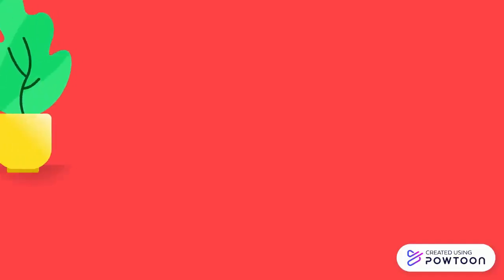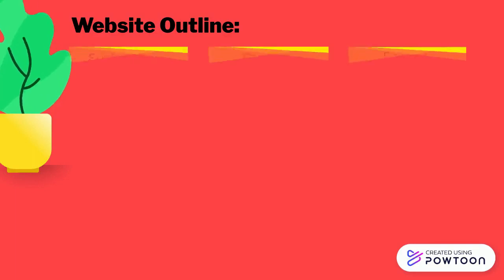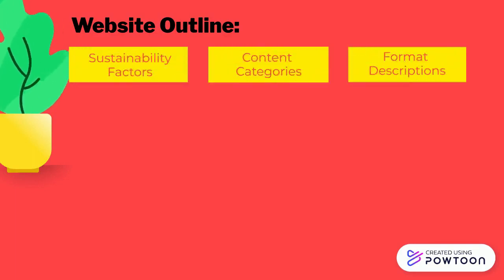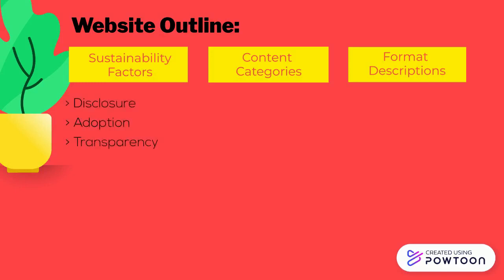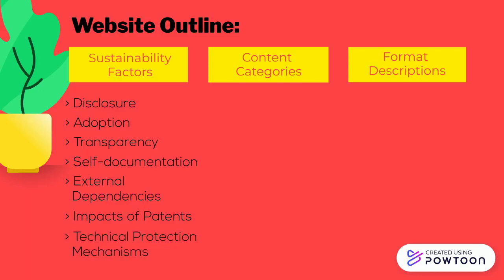This website is organized by tabs that lead to individual pages. The main content is found under the following tabs. The Sustainability Factors page goes over the seven key factors that have the most influence on sustainability. These factors are disclosure, adoption, transparency, self-documentation, external dependencies, impacts of patents, and technical protection mechanisms.